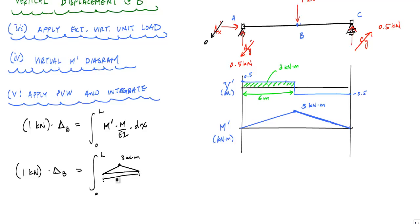And my real moment diagram, or my real curvature diagram, is a parabolic function, where this value here was 90 kilonewton meter over EI. This distance was 12 meters here, dx.